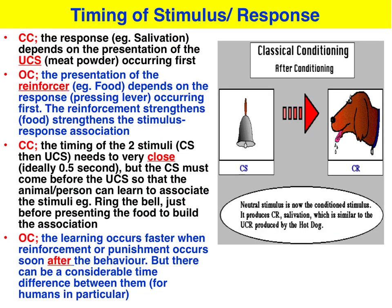In terms of the timing of stimulus and response, for classical conditioning the stimulus comes first and the response second. For Pavlov and the dog, the stimulus — the sound of a bell — leads to the response of salivation. In the case of someone with a phobia of spiders, the stimulus is seeing a spider on the wall, and the response is a fear and anxiety response.